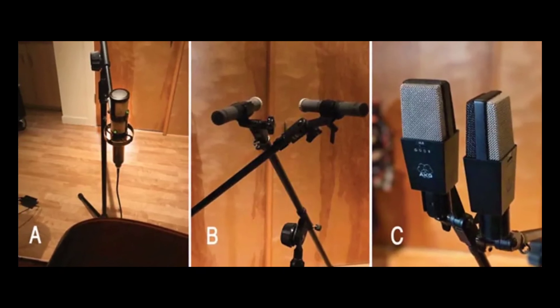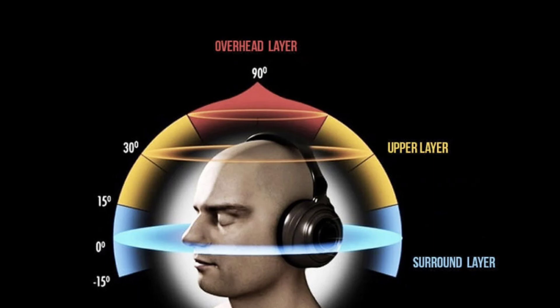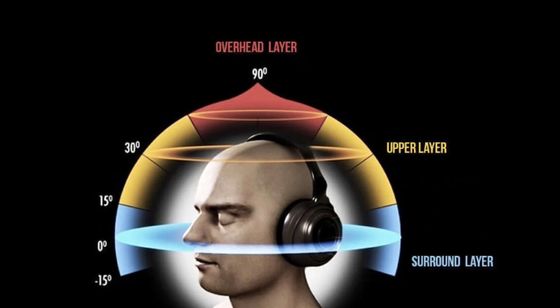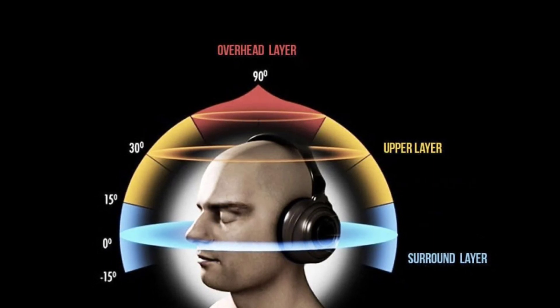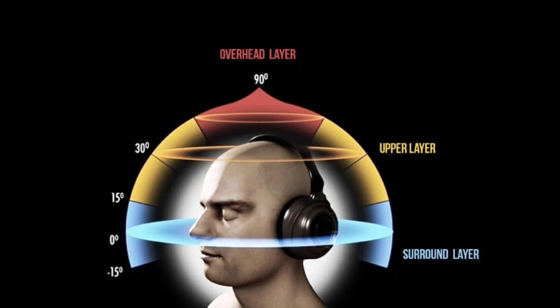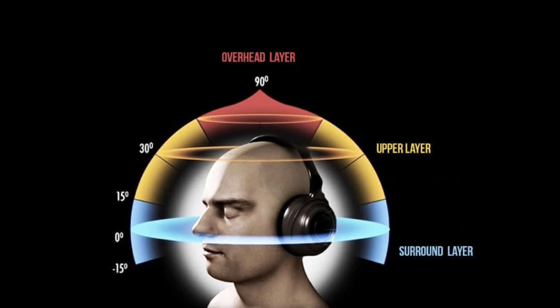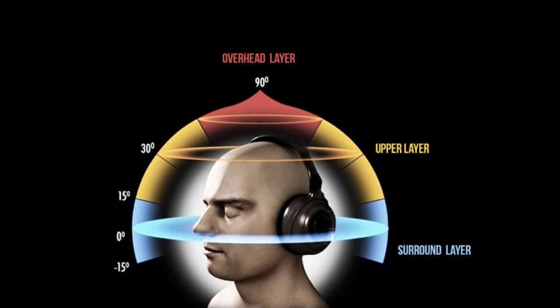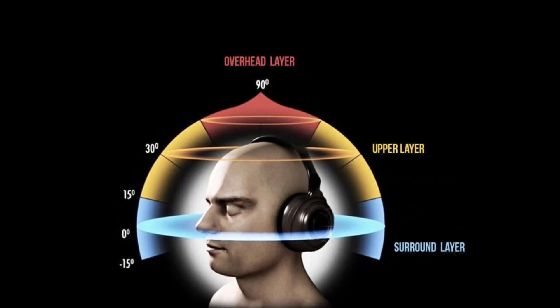On the other hand, binaural sound is a stereo audio that is also recorded through a dual microphone setup. The goal of recording binaural sound is to create a 3D audio effect that simulates sound as if it is being heard live. Binaural sound is best experienced through headphones. The word binaural literally means having two ears.